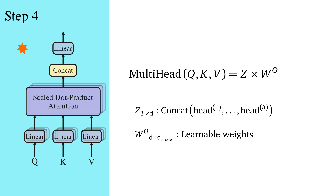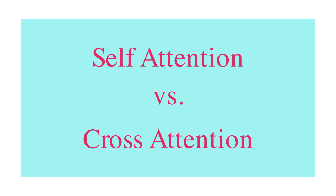An important point is that the computational cost of multi-head attention is more or less similar to performing a single scaled dot product on large Q, K, and V matrices. However, while the computational cost is similar, multi-head attention is more beneficial because it can extract context information from different subspaces at different positions of the input sequence.